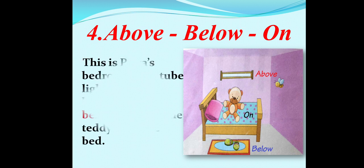This is Priya's bedroom. The tube light is above the bed. The mat is below the bed. And the teddy is on the bed.